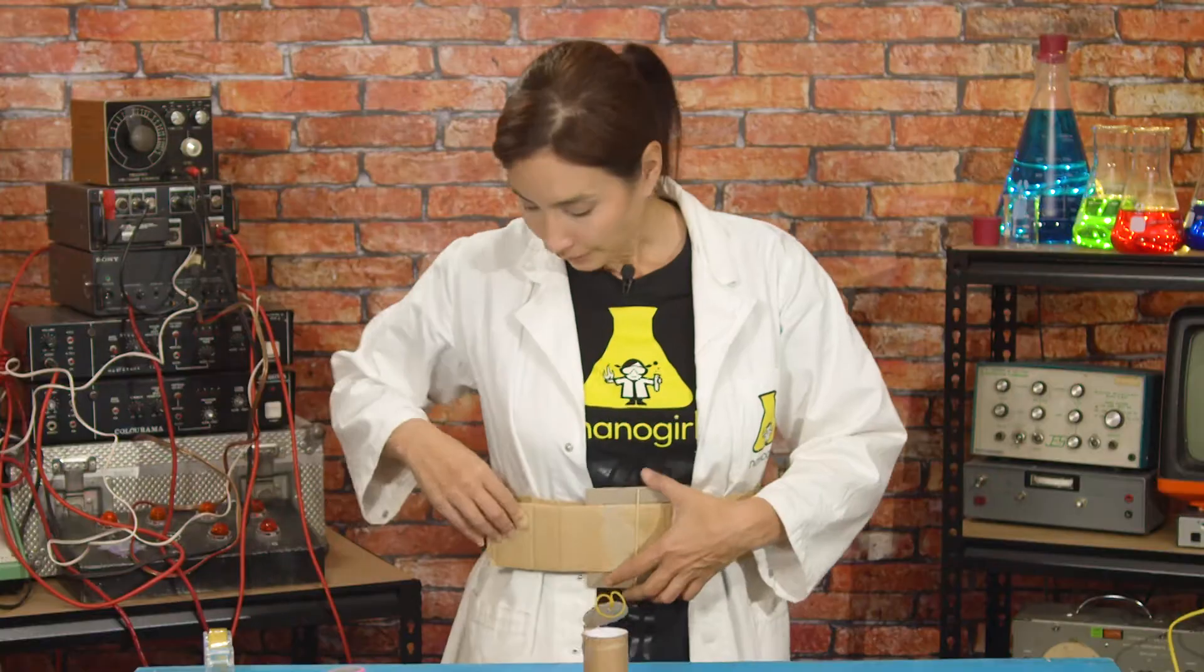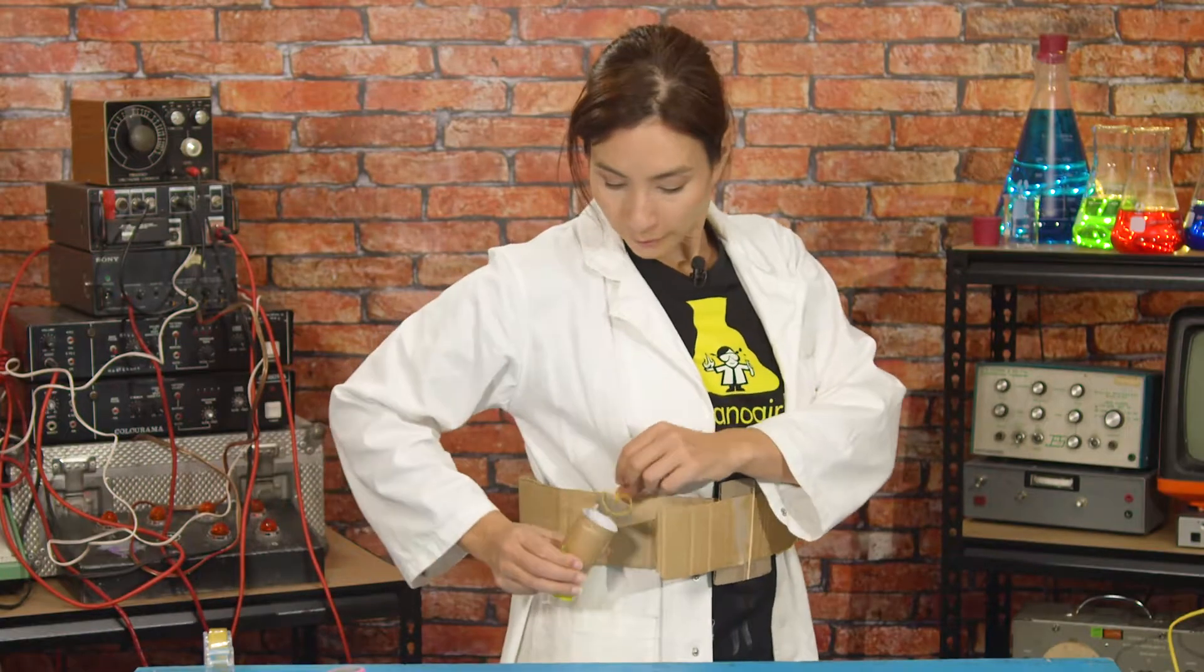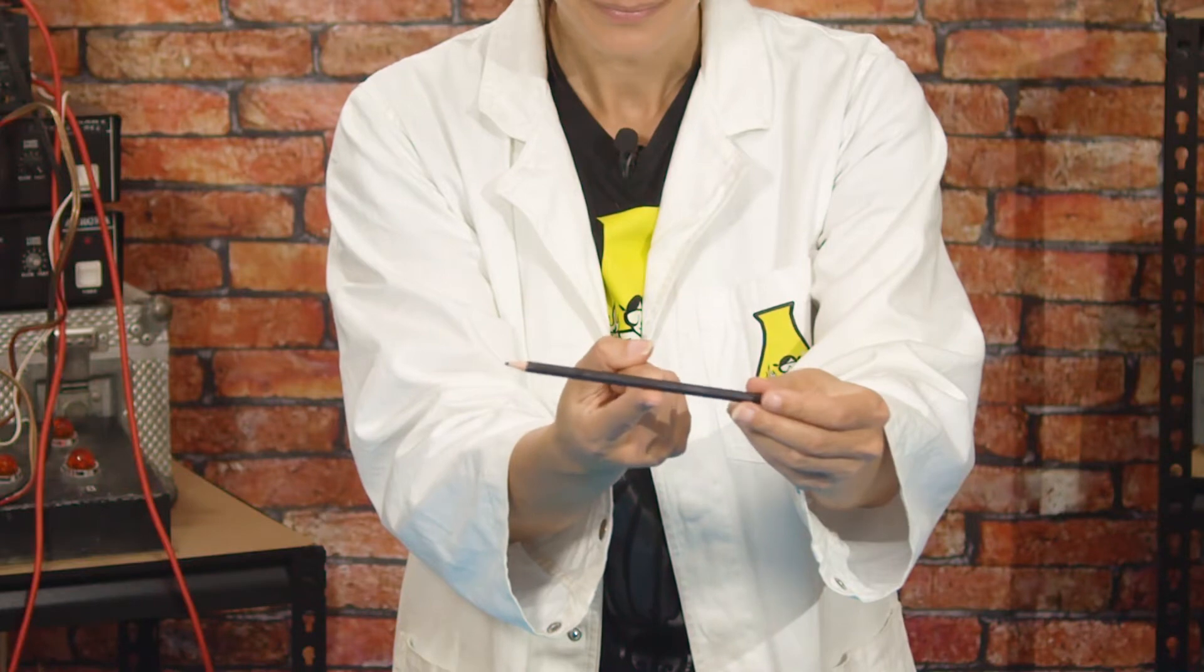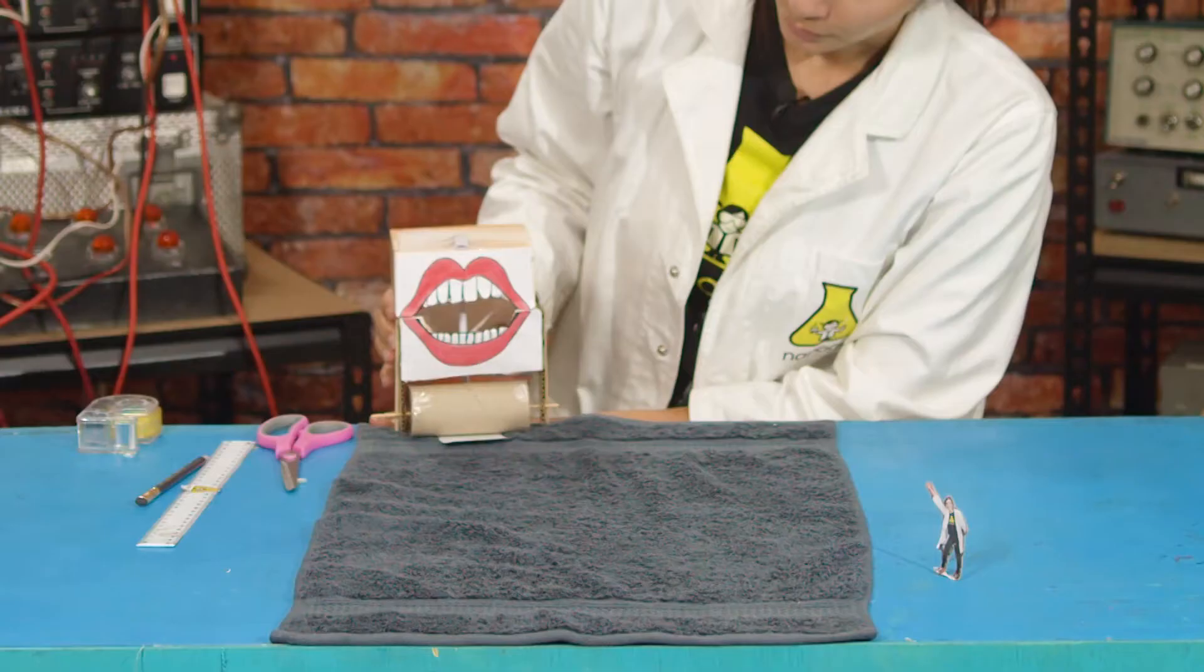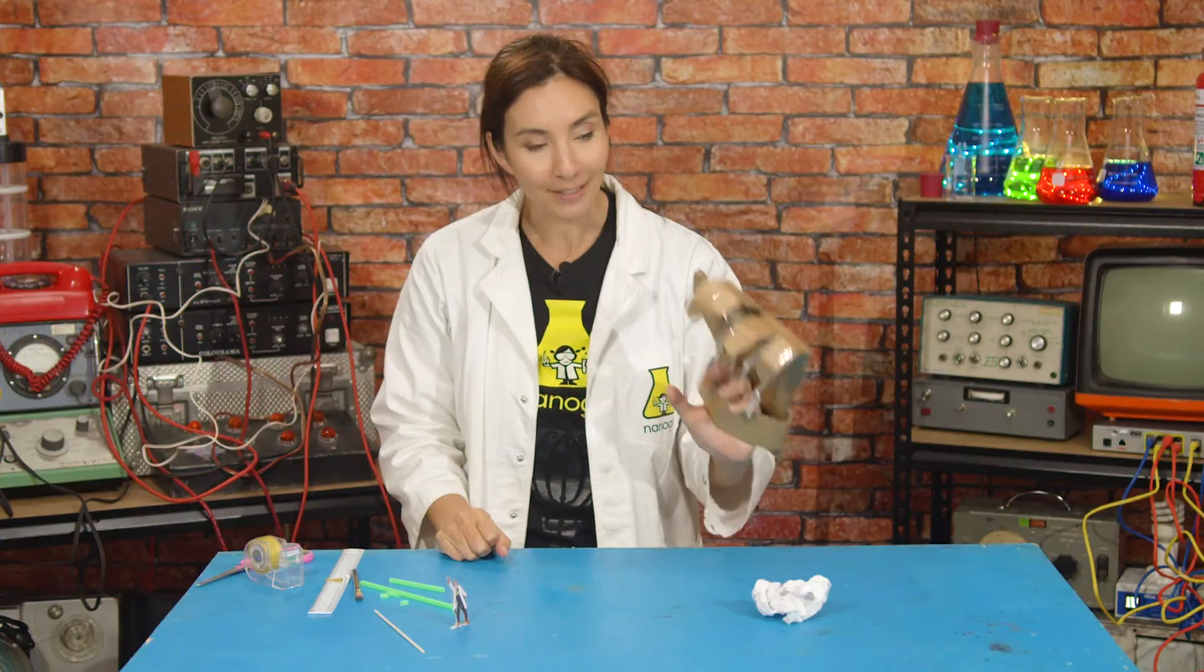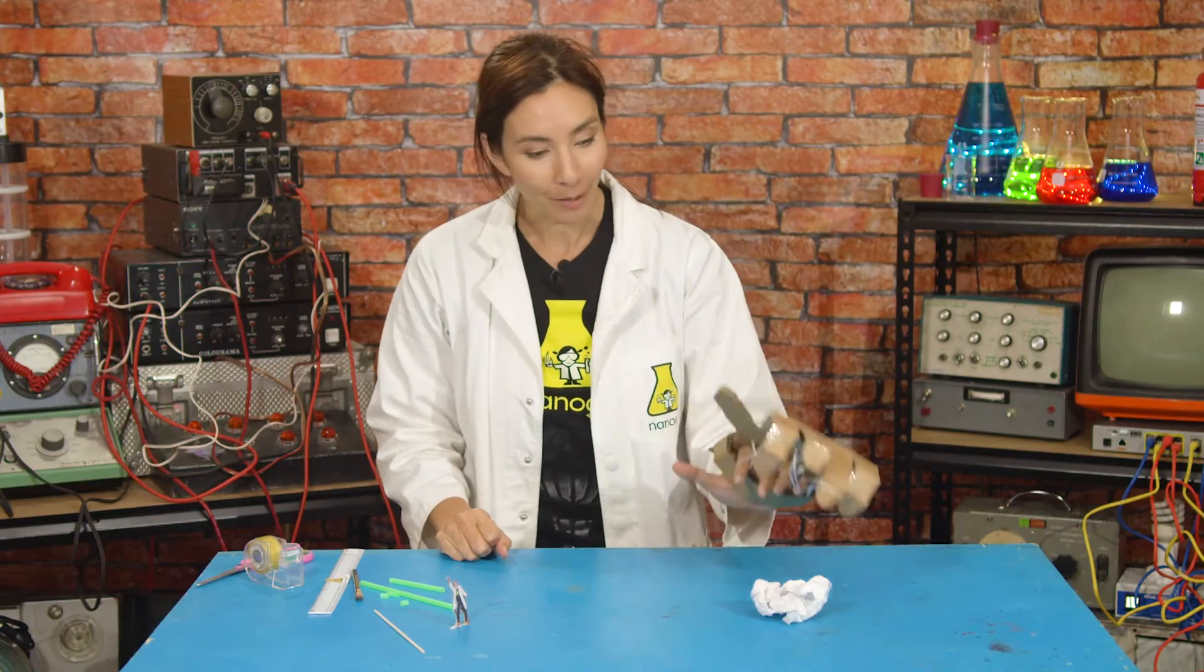So far I've made my utility belt and an awesome confetti cannon that uses the science of energy and thrust. I've also got a perch for my new butterfly sidekick to rest on and learn about the centre of gravity. I've also learnt about hinges and used them to make a set of biting teeth. And finally, I've got a gigantic superhero hand.